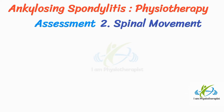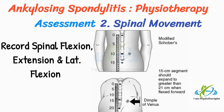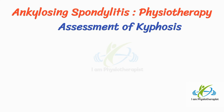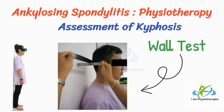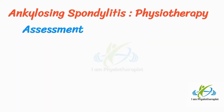Spinal movement assessment: Record spinal flexion, extension, and lateral flexion; limitation of lateral flexion is one of the earliest diagnostic signs of the disease. Assessment of kyphosis is done by the wall test — the patient stands with their back to a wall; normally, heels, buttocks, scapulae, and occiput can touch the wall simultaneously. In ankylosing spondylitis there is limitation of extension; measure the distance between the wall and the tragus of the ear — normal values are less than 14 centimeters.